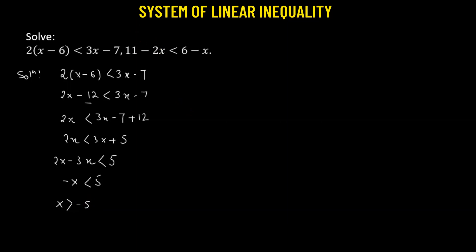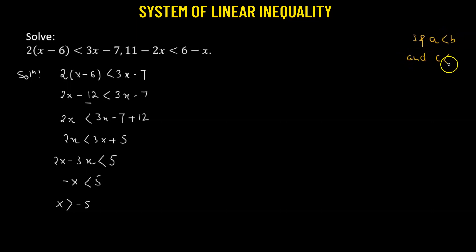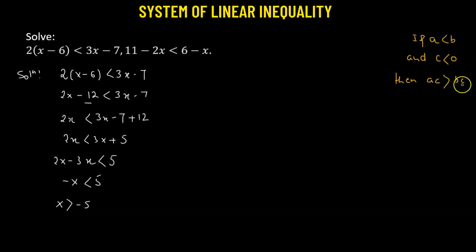Here we have made use of the fact that if we have two numbers a and b, and a is less than b, and we have another number c that is negative, then if we multiply a and b by c, the sign of the inequality changes — meaning ac will become greater than bc. This is the property we used to get x greater than negative 5.